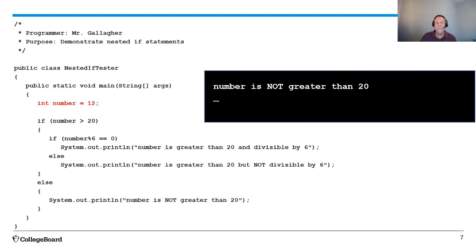Now you might say, well, wait a minute, but number is divisible by six because it's 12. And that's true. However, because the second if statement where I checked for that mod six is inside of the first if statement and the first if statement evaluated to false, I never get a chance to check for mod six.